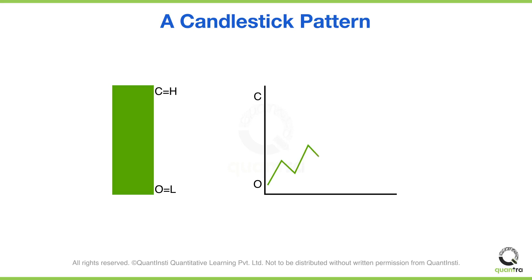Again, there must have been some corrections. The correction may or may not have broken the previous low. However, whenever the price went up, it broke the previous high. This continued till day end, till the closing price. One thing you need to note is the price never went below the open and closed at the high of the day — that is, the open became the low and the close became the high. This is how you actually got a candle that does not have any kind of wicks.